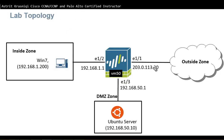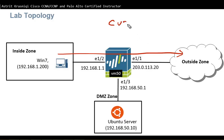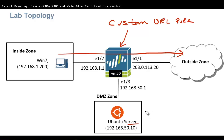This is the lab topology we'll be using to demonstrate URL filtering. We have an inside zone, and we already have a security policy rule that allows inside zone users to access the outside zone. What we're going to do is clone that and create a custom URL rule that will deny access to news sites. We also have a list of websites users shouldn't access on the Ubuntu server, and we're going to create an external dynamic list so our firewall checks and updates that list.